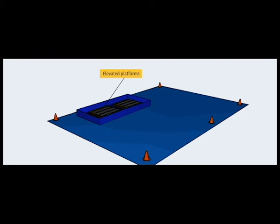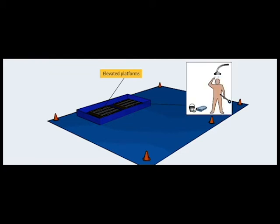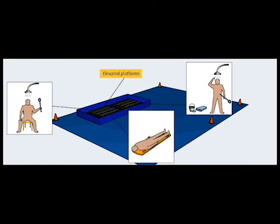Elevated platforms should be placed inside the pool to keep the patient out of the wastewater. These platforms must be strong enough to hold a standing and walking patient, to support a chair for the semi-ambulatory patient, and to accommodate a patient on a backboard.